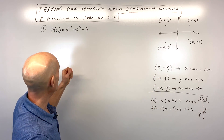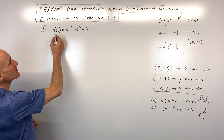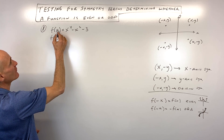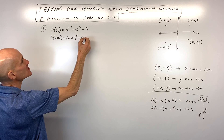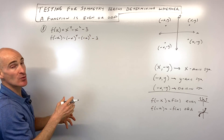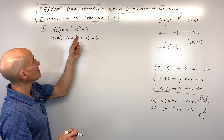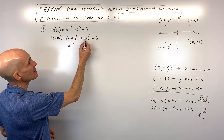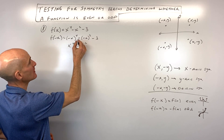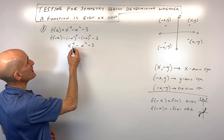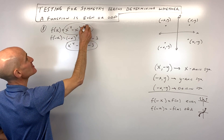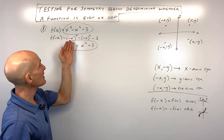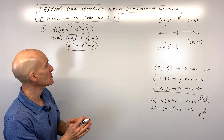Let's do three examples. First, the even/odd test. I'll replace every x with negative x, putting it in parentheses to treat it as a group. A negative to an even power is positive, so negative x to the fourth is positive x to the fourth, and negative x squared is positive x squared. This gives back the original equation, so the function is even — meaning it's symmetric about the y-axis.